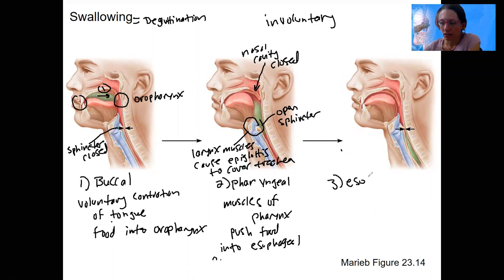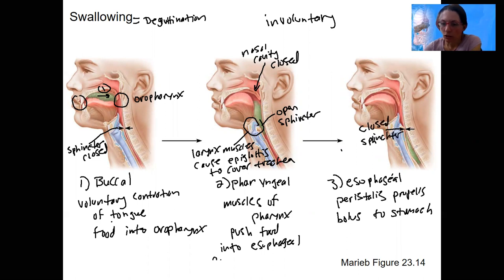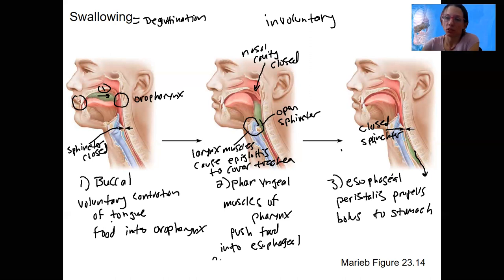Phase three is the esophageal phase. Food enters the esophagus, which initiates peristalsis. Peristalsis propels the food — the bolus — to the stomach. The upper sphincter is now closed again. The food continues down to the lower esophageal sphincter, which then opens. These are short reflexes — relaxation of the sphincters — that don't require central nervous system control. It's regulated by local distension and mechanoreceptors as the food passes through.